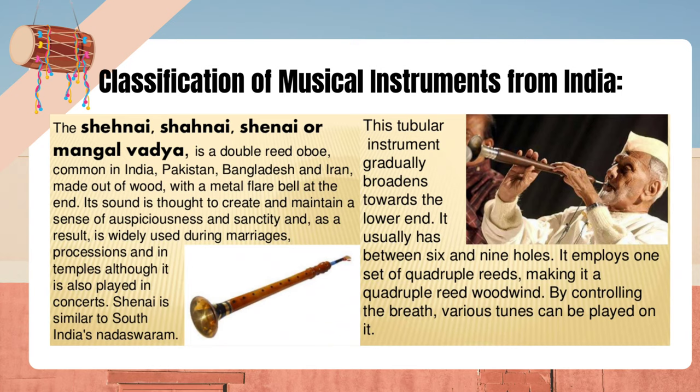The shanai, also called mangal vadiyam, is a double reed oboe common in India, Pakistan, Bangladesh, and Iran, made out of wood with a metal flare bell at the end. Its sound is thought to create and maintain a sense of auspiciousness and sanctity, and as a result it is widely used during marriages, processions, and in temples, although it is also played in concerts. Shanai is similar to South India's Nadaswaram. This tubular instrument gradually broadens towards the lower end, usually has between six and nine holes, and employs one set of quadruple reeds, making it a quadruple reed woodwind.